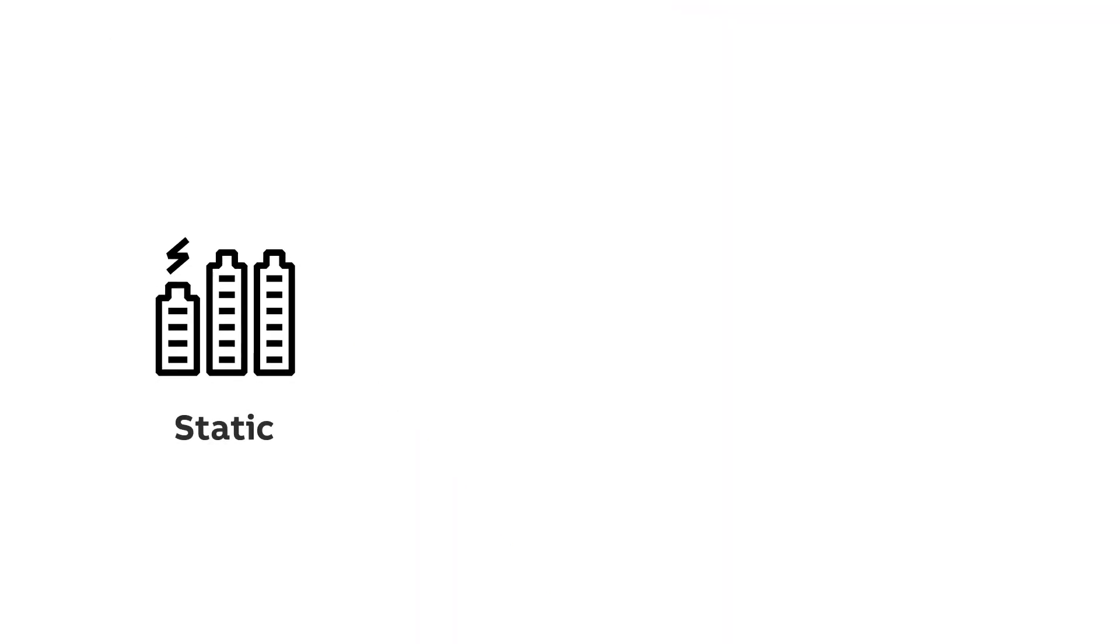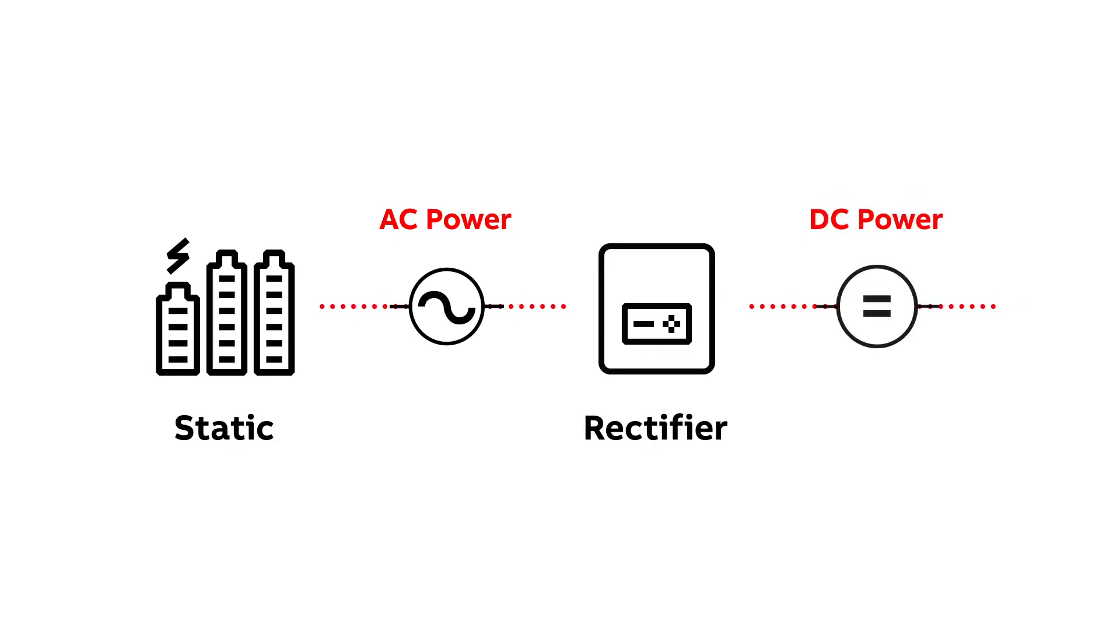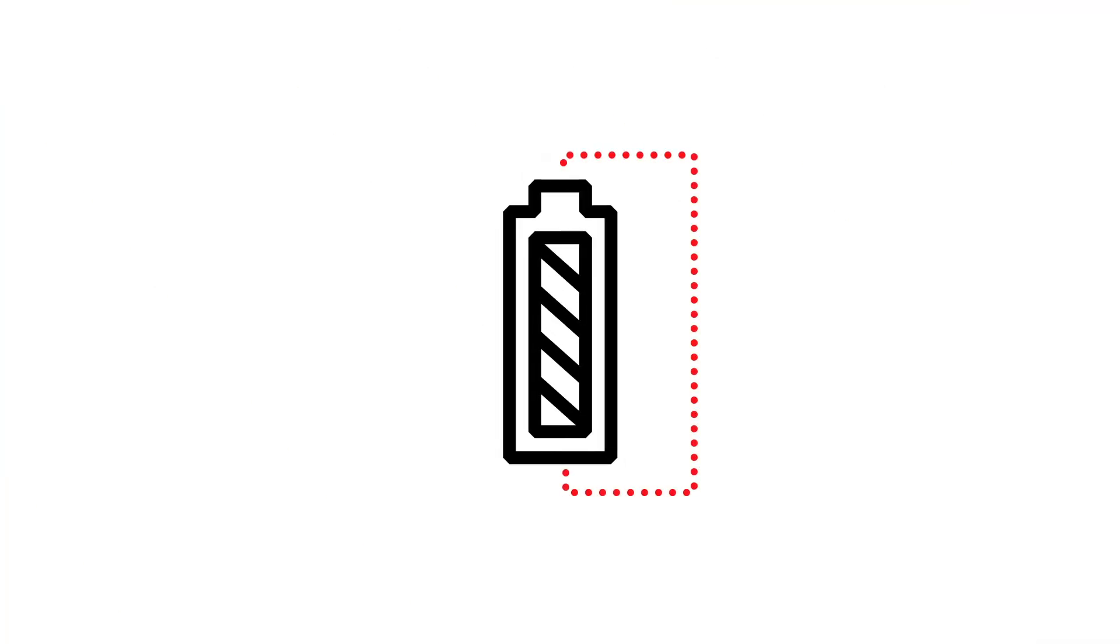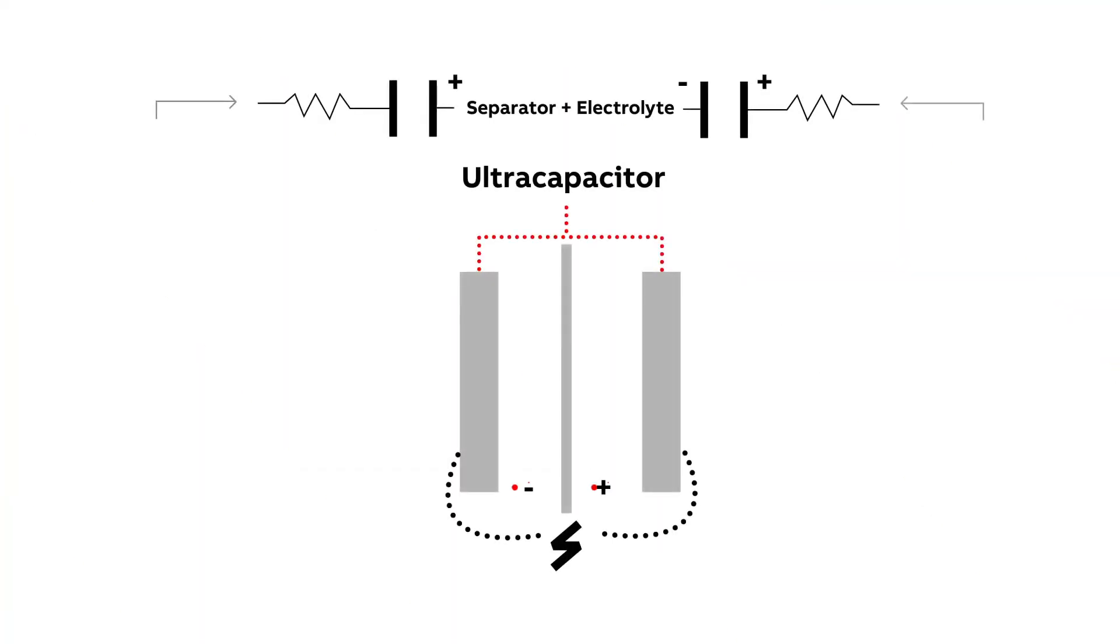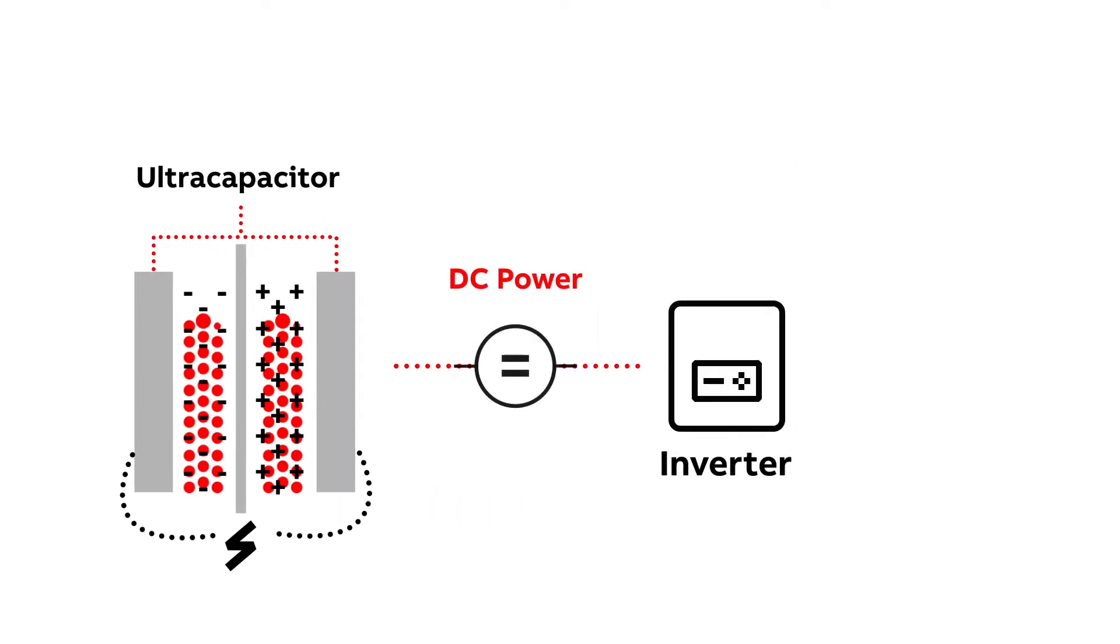Static UPS systems with no moving parts convert AC to DC through a rectifier. In turn, batteries delivering electrochemical energy and ultracapacitors distributing the electrostatic energy stored between its metal plates generate DC, which is then converted back into AC to power the load using an inverter.